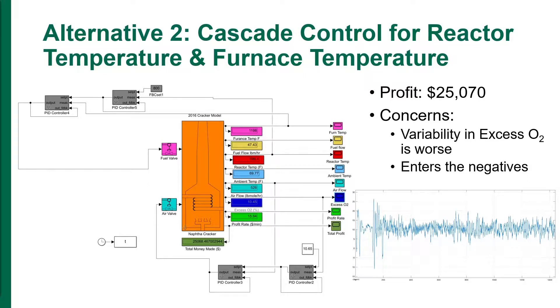The second alternative was to implement a cascade loop to replace the existing feedback controller between the reactor temperature and fuel flow, and the feedforward loop between the ambient temperature and the fuel valve. The inner loop controller, PID controller 4, controlled the furnace temperature, while the outer loop controller, PID controller 5, controlled the reactor temperature. The profit was $25,070. The profit was actually lowered, and the excess O2 resulted in the negatives. This was a very inefficient control scheme.